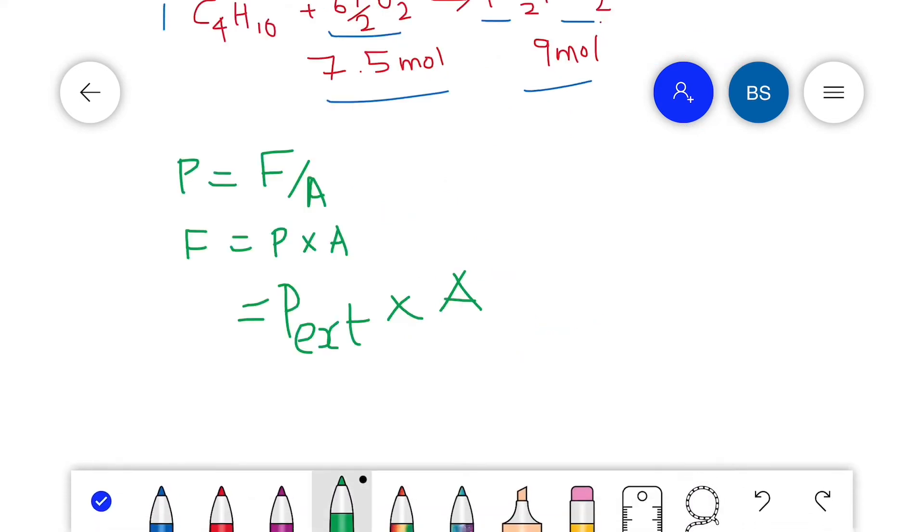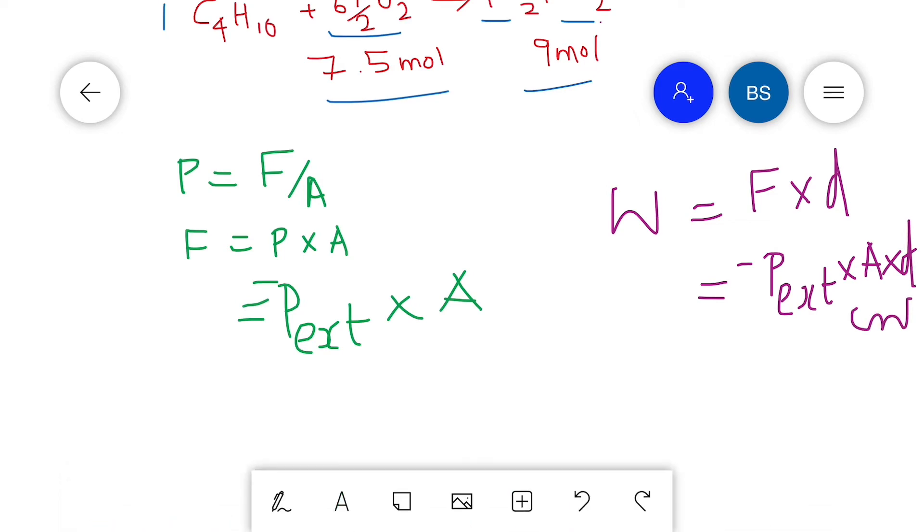If you see, the external pressure is in the opposite direction, so we put a negative sign: negative P external times area. We know that work is equal to force times displacement. We can substitute the force here as negative P external times area times displacement.